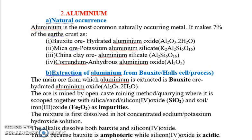Welcome back. Let us look at extraction of aluminium metal. Aluminium is the most commonly naturally occurring metal — it makes up about seven percent of the earth's crust. It exists as bauxite, which is hydrated aluminium oxide; mica ore, a potassium aluminium silicate; china clay, also known as aluminium silicate; and corundum, anhydrous aluminium oxide. The chief ore used in extraction of aluminium is bauxite.